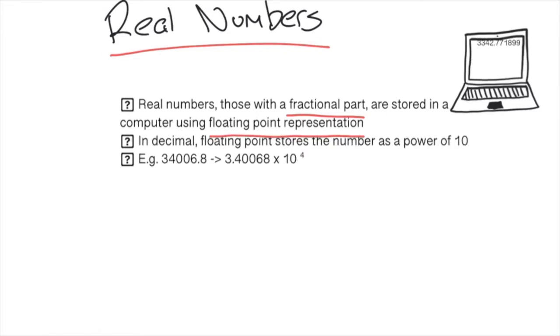In decimal, floating point stores the number as a power of 10. So something like 34006.8 would end up being 3.40068 times 10 to the power of 4. In this example, 3.40068 is the mantissa and 4 is the exponent.